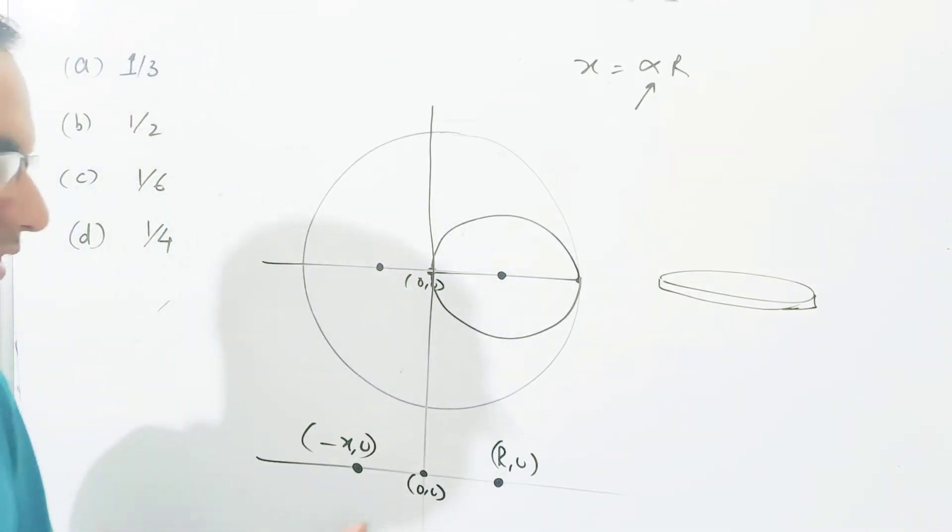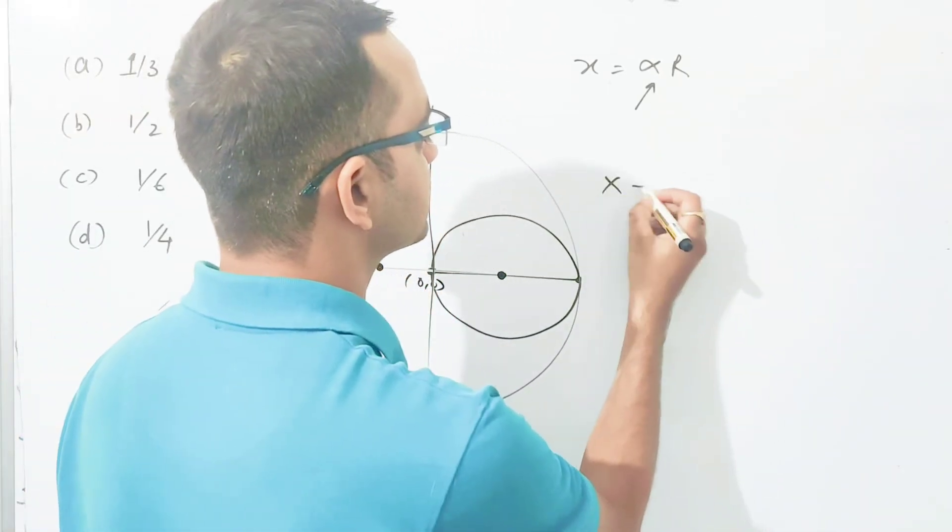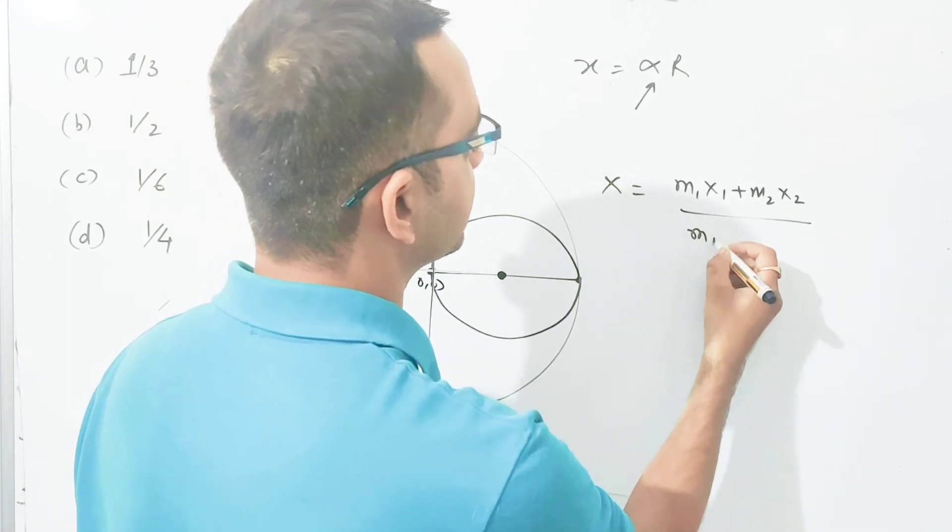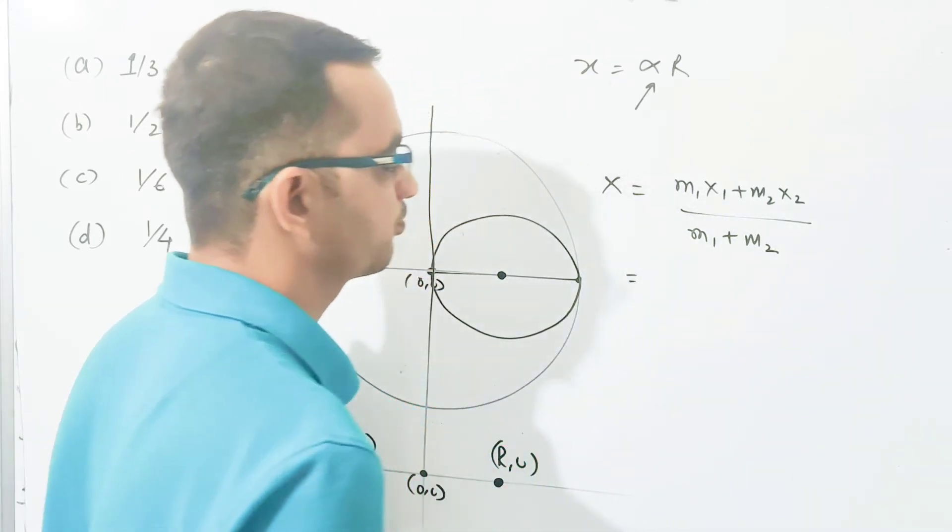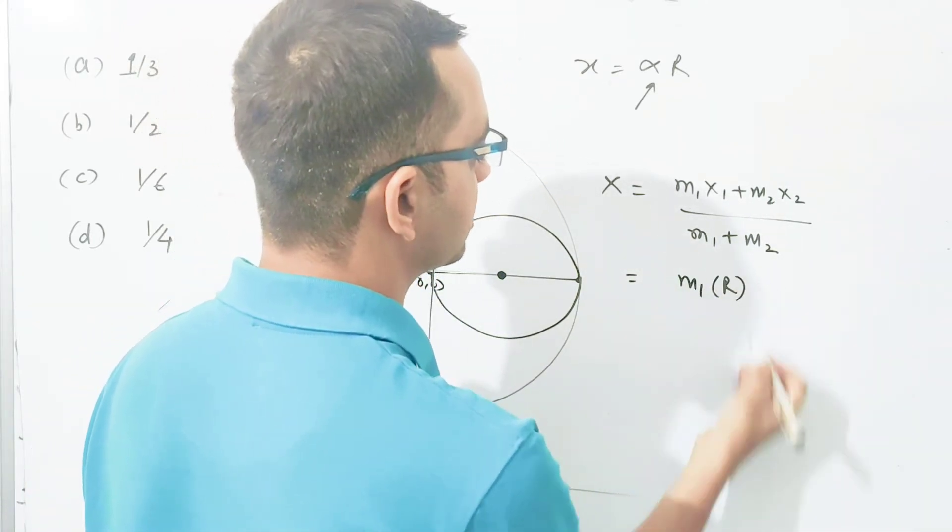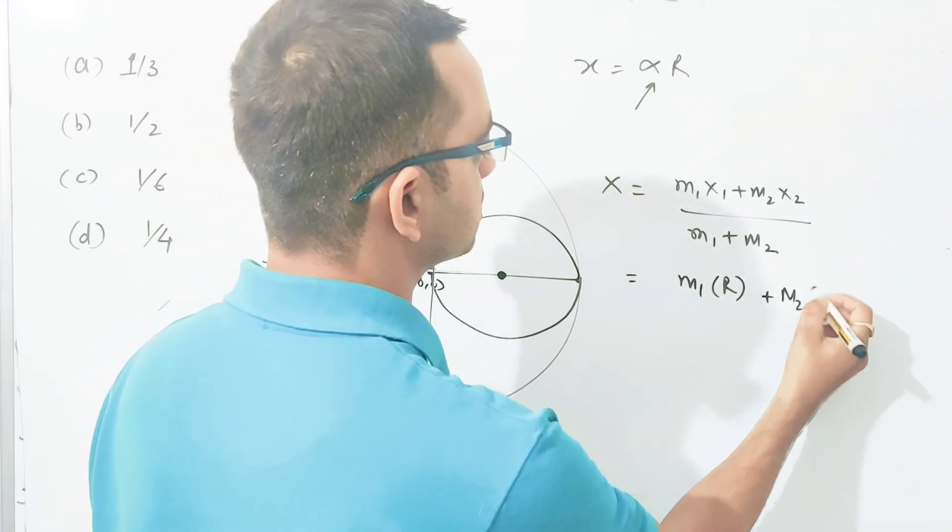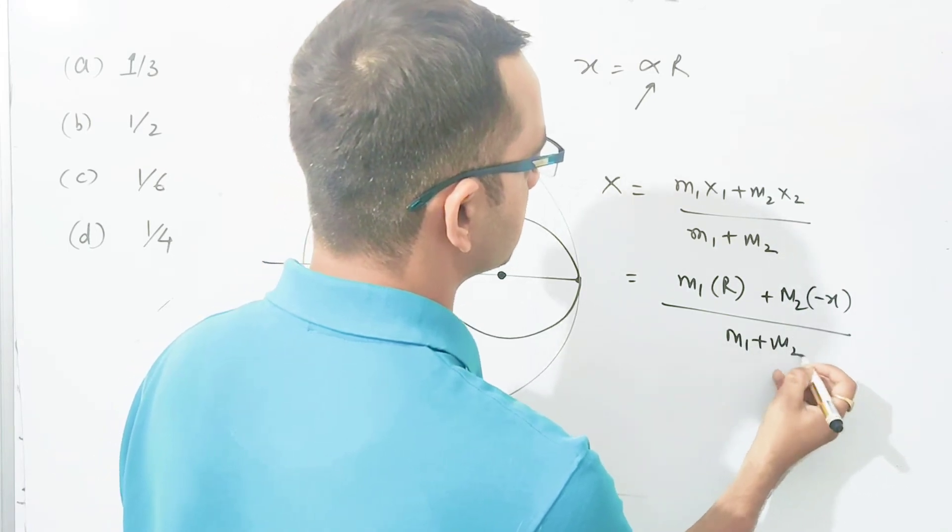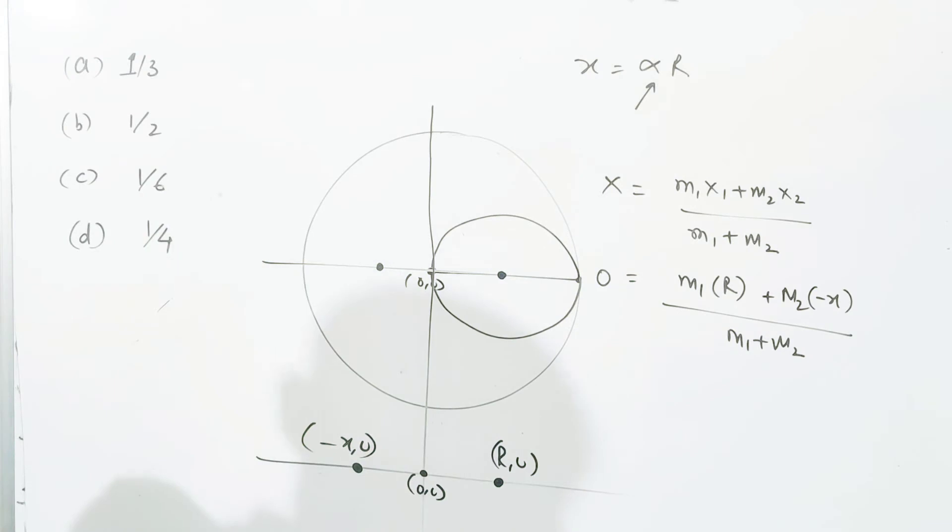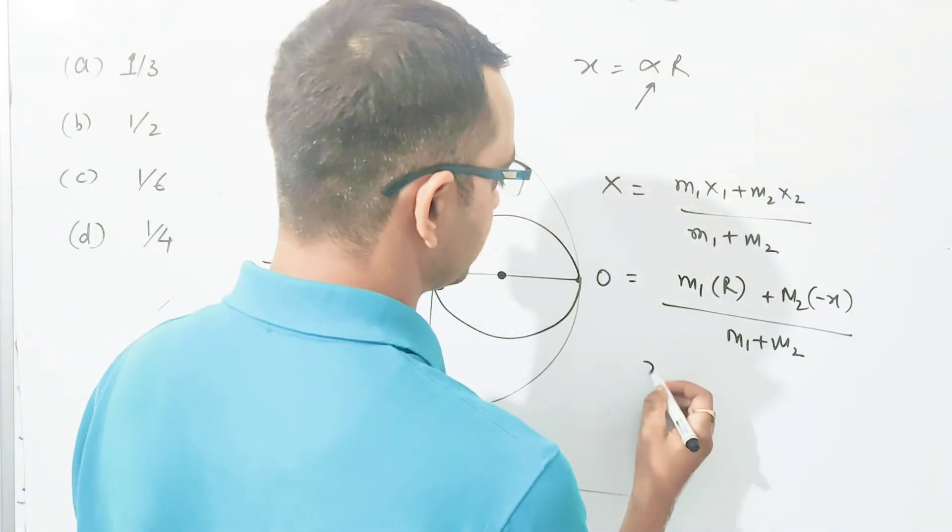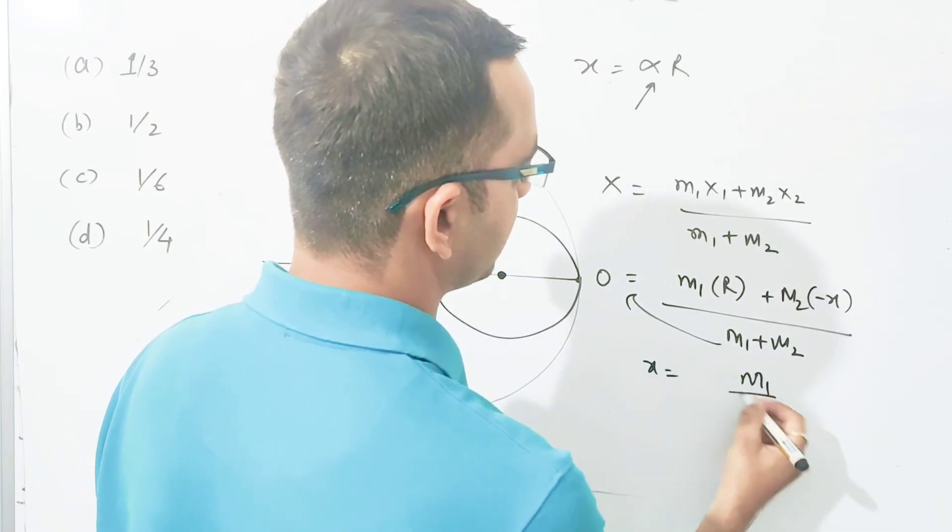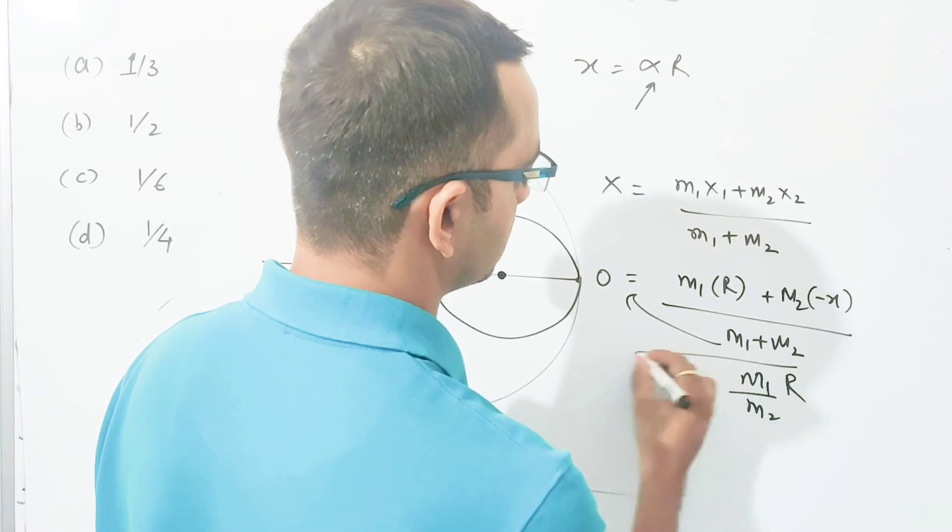We can use the formula for center of mass. x equals m1 x1 plus m2 x2 divided by m1 plus m2. Now m1 is at r and m2 is at minus x. This gives us x equals m1 by m2 into r.